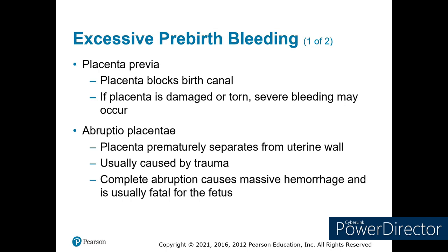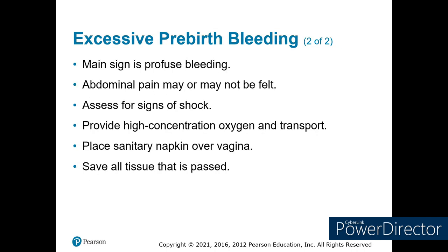Placenta previa is excessive pre-birth bleeding where the placenta forms across the birth canal, blocking the exit and requiring C-section. Abruptio placenta is when the placenta starts tearing away from the uterine wall prematurely — typically from a blow to the belly, trauma, or deceleration — causing massive bleeding into the uterus with possible vaginal bleeding. Treat with oxygen, transport, sanitary napkin, and save any discharged tissue for hospital examination.